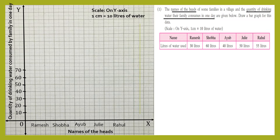Now let's start drawing the bars, that is rectangles. Ramesh's family consumes 30 liters of water, so we'll draw a first vertical line of three centimeters, which corresponds to 30 liters, then one more vertical line of the same height of three centimeters. The tops of both lines will be joined by a horizontal line, so the rectangle is complete.